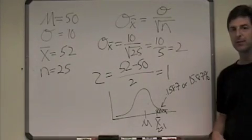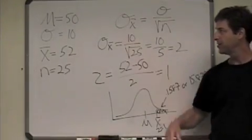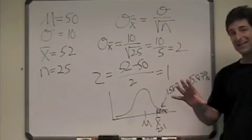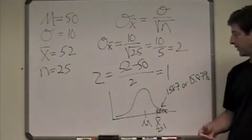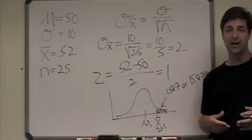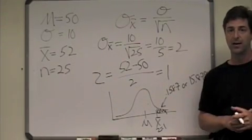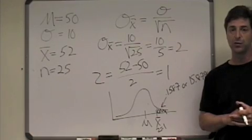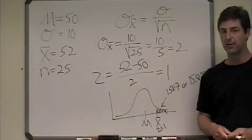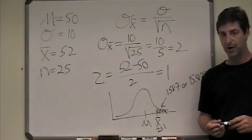And then we wrap words around our result. The probability of getting a sample mean of 52 when the population mean is 50, by chance, and the sample size is 25, is 15.87%. Or, 15.87% of sample means of n equals 25 would be expected to have sample means of 52 or higher when the population mean is 50. That's how we use Appendix A to calculate a probability.